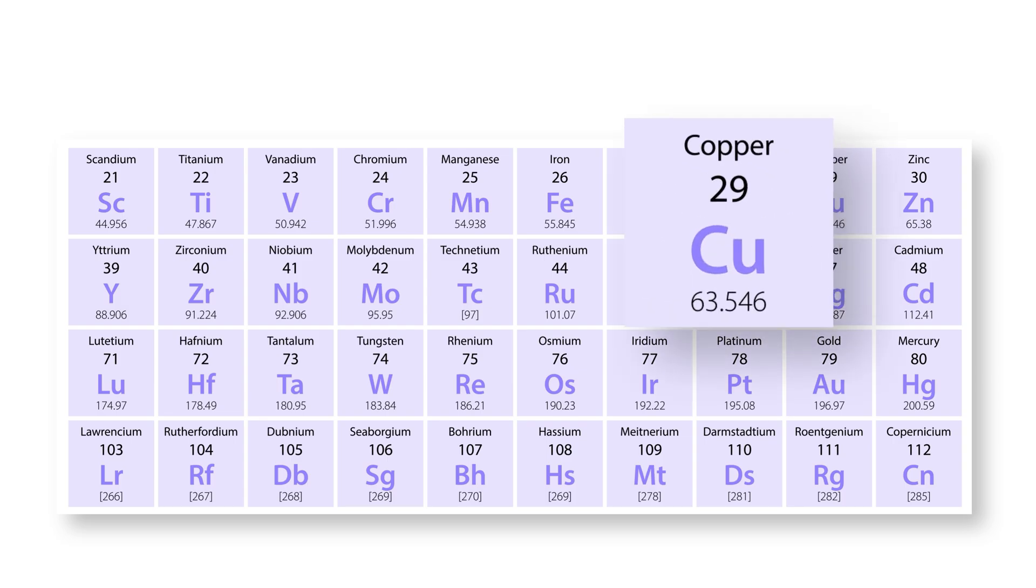Copper's atomic number is 29, so how many protons does it have? That's right, 29.